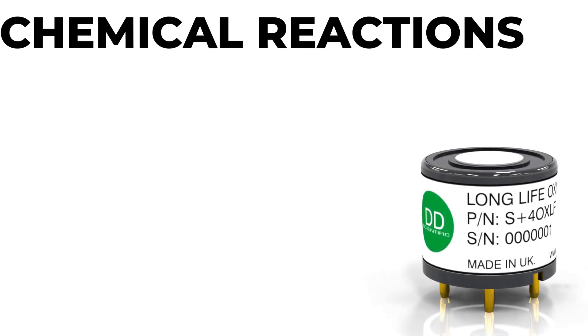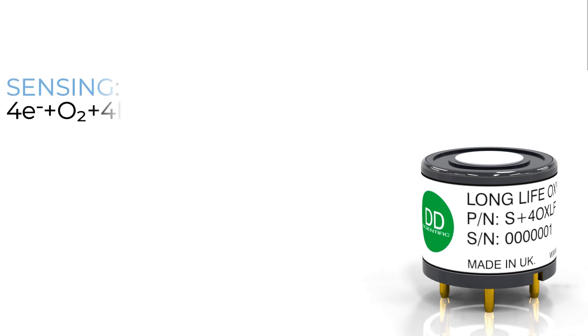So in summary, at the sensing electrode we have a chemical reaction called reduction whereby oxygen is combined with protons and electrons to form water. At the counter electrode water is hydrolyzed to produce oxygen, protons and electrons. This is the opposite reaction to what is happening at the sensing electrode.